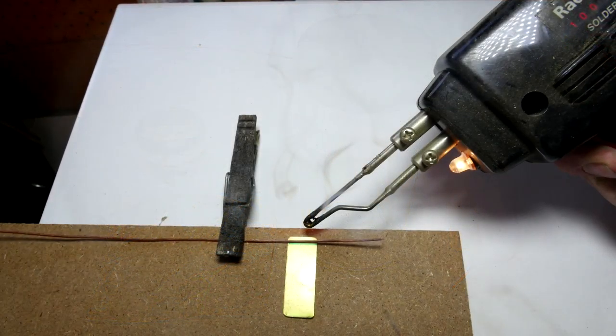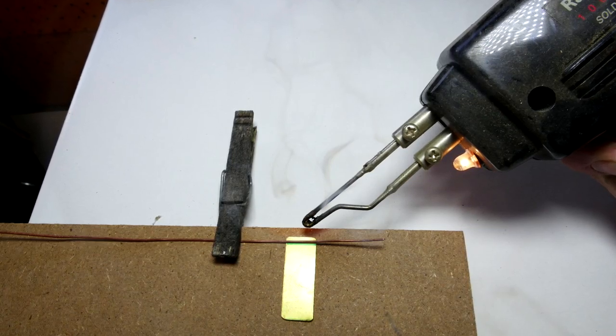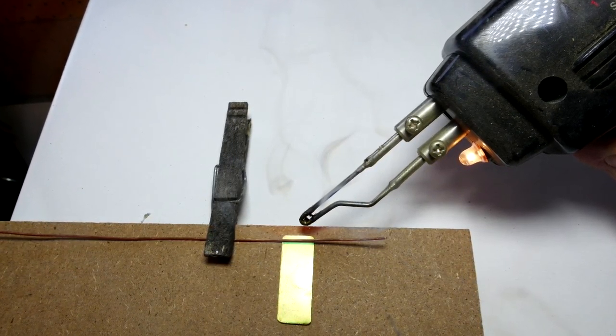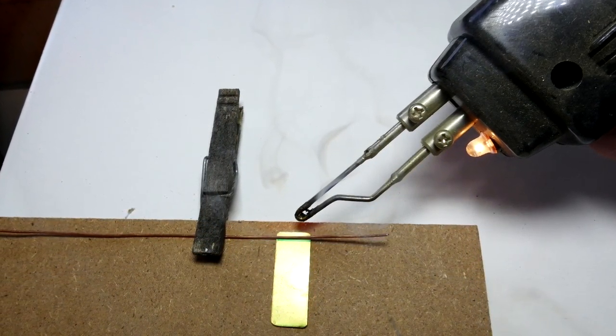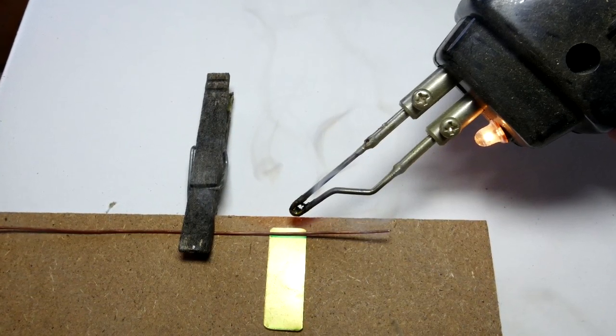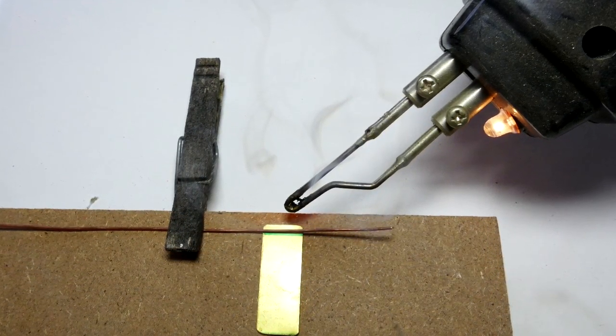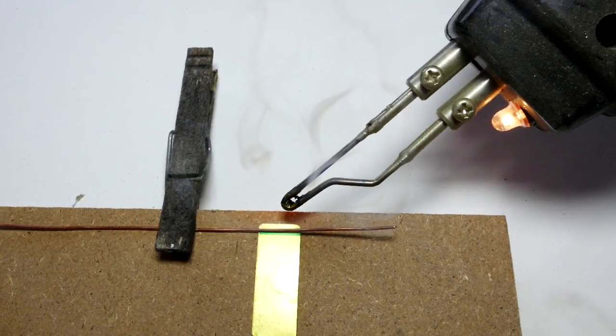So the first thing I did is I soldered the copper wire to the back of the brass plate. Now because these are high electrostatic voltages you actually don't even need to solder it. You could tape it or you could glue it and it would actually probably work just as well, but soldering was kind of slick and very strong.